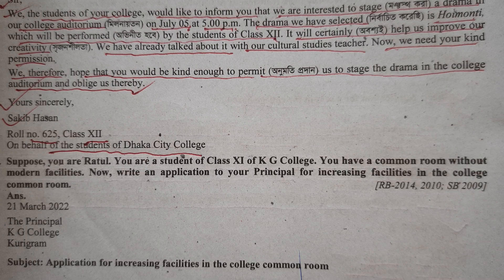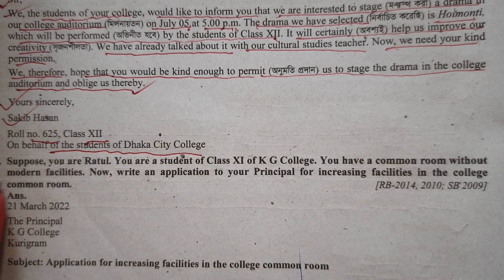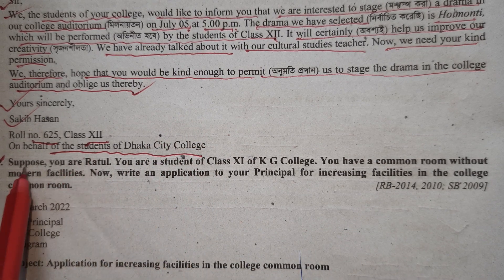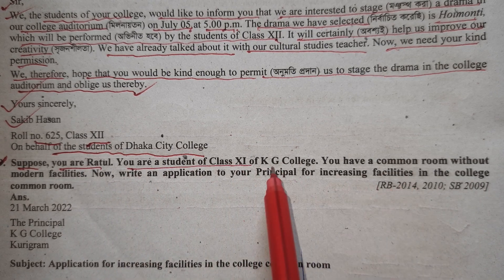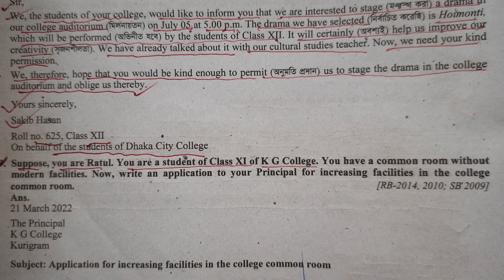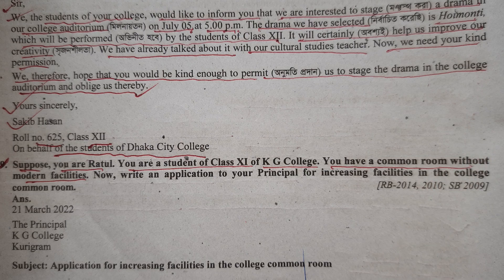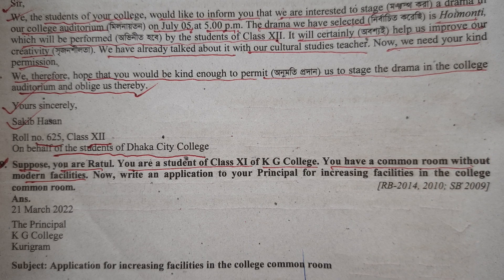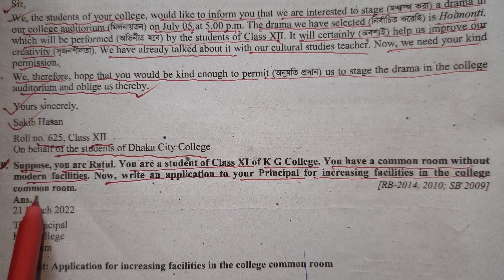Young Learners Communicative English, Model Questions, Second Paper — English application writing. The question is: suppose you are a student of class 11 of KG College. You have a common room without modern facilities. Write an application to your principal for increasing facilities in the College Common Room.